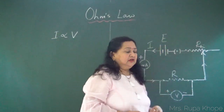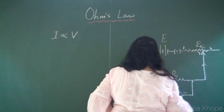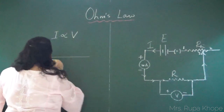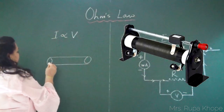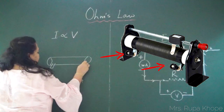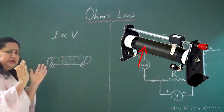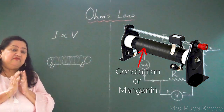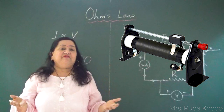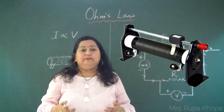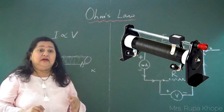Now comes the rheostat, which has three terminals. It has a ceramic body. The wire wound around it is made of constantan or manganin. This wire has a high level of resistivity, whereas it has a very low temperature coefficient — the coefficient of temperature is very low for these alloys.